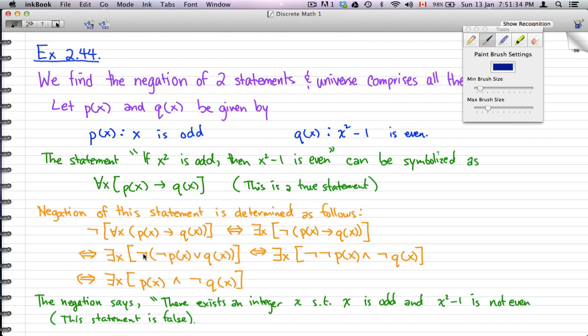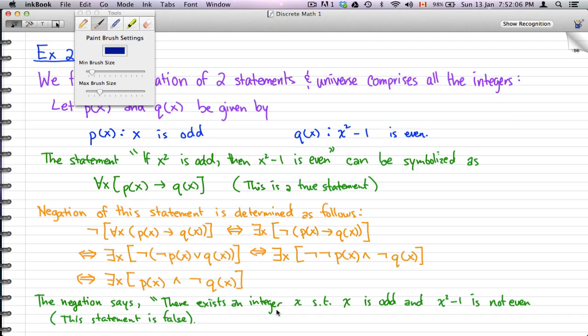Now if we expand the negation symbol into the brackets, we get double negated p(x) and negated q(x), which is logically equivalent to exists x [p(x) and not q(x)]. The double negation cancels out to get p(x), and that is how we negated our first statement: 'if x² is odd then x² - 1 is even'.